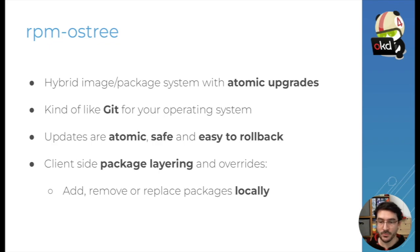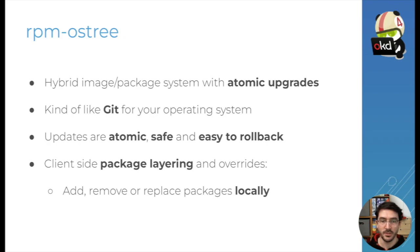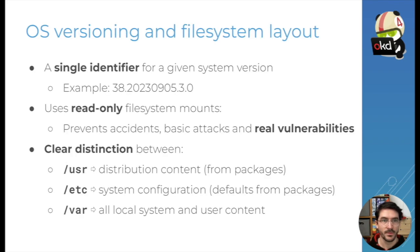With RPM-OSTree, you also have options for changing the content of the system. Usually image-based systems are very fixed on what's included in the image, and changing that is difficult. However, with RPM-OSTree, you have options to do local package layering, which means you can take packages and replace those existing in the image or add new ones. The system comes as an image, so instead of having hundreds or thousands of versions for all the different packages, they are hidden behind a single version number that we give to all Fedora CoreOS releases.